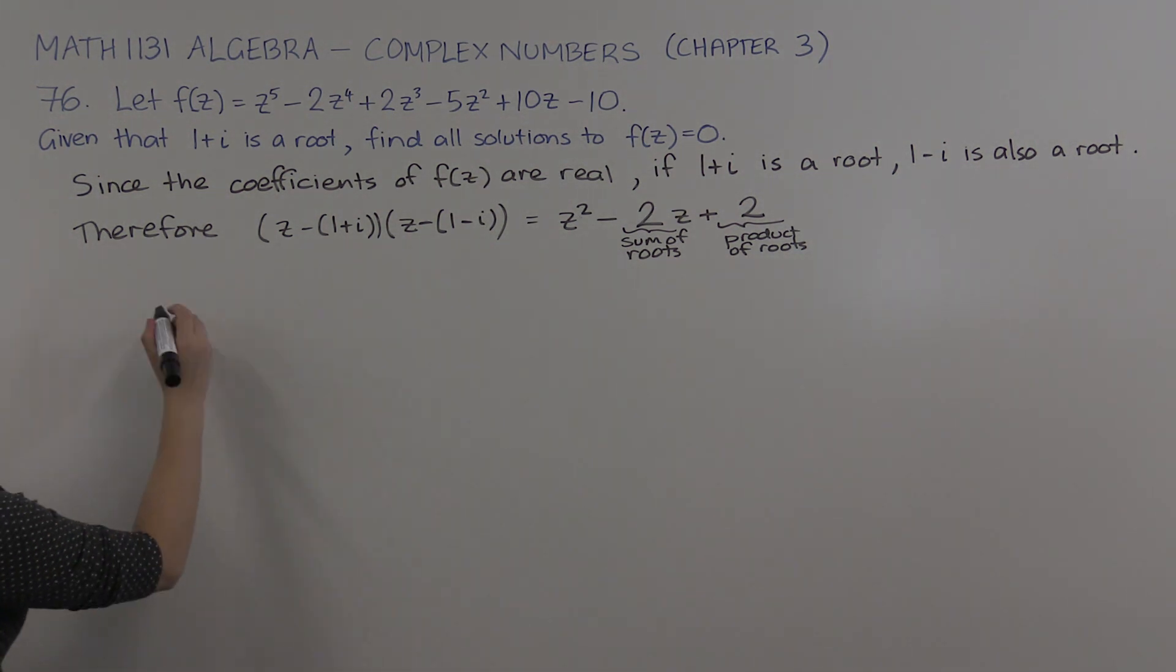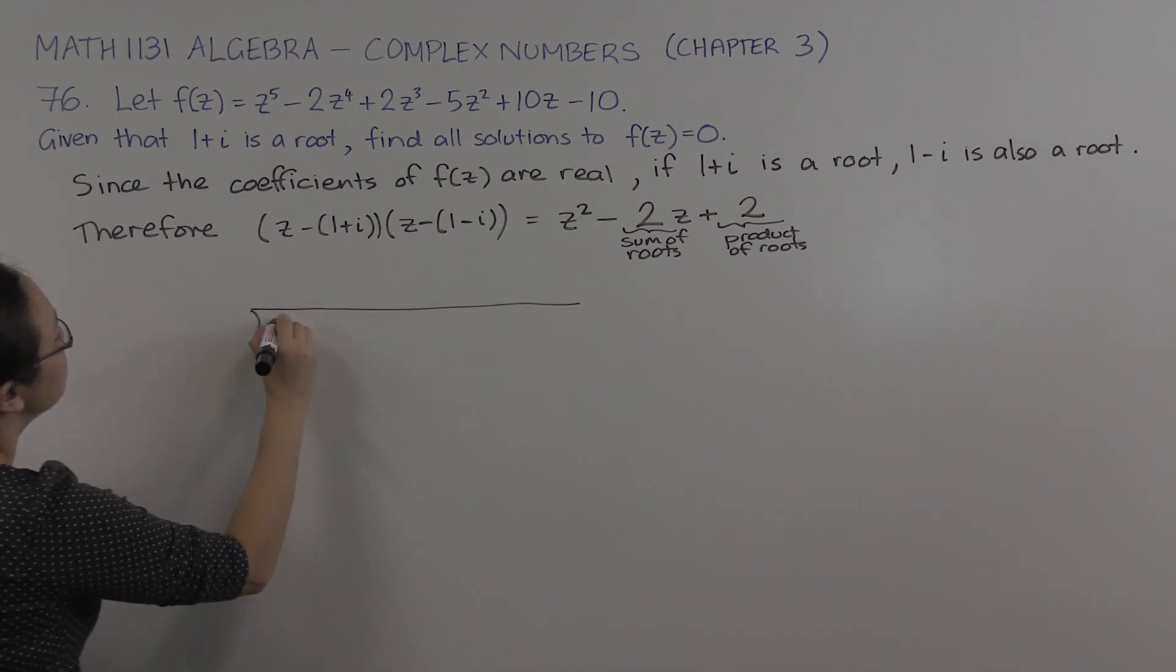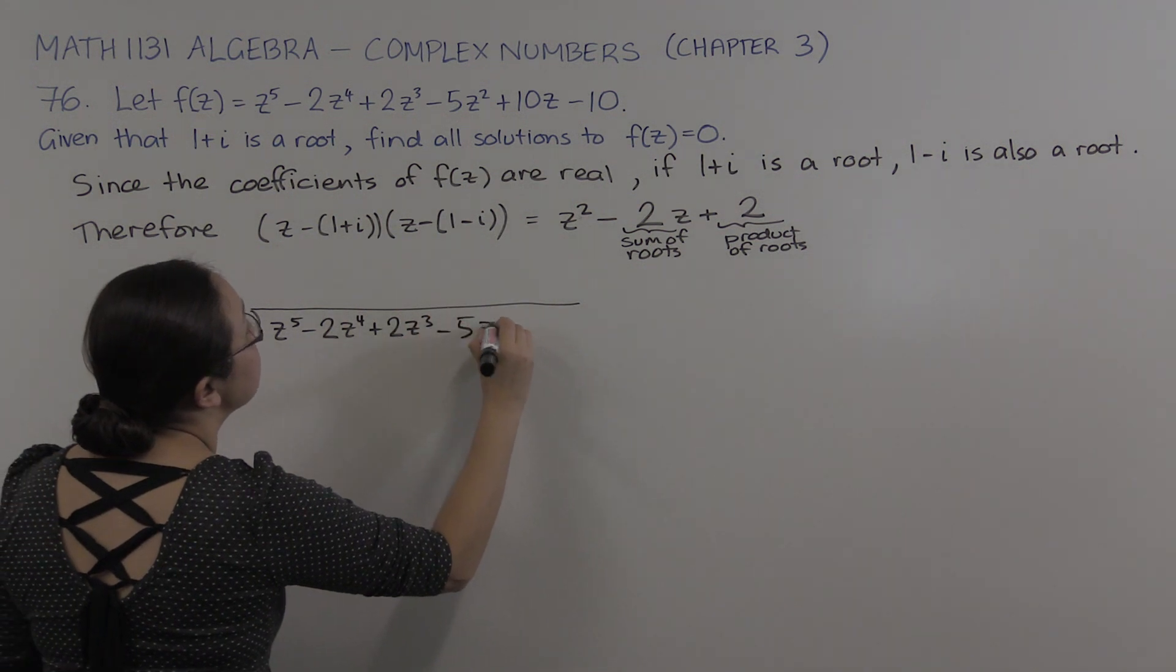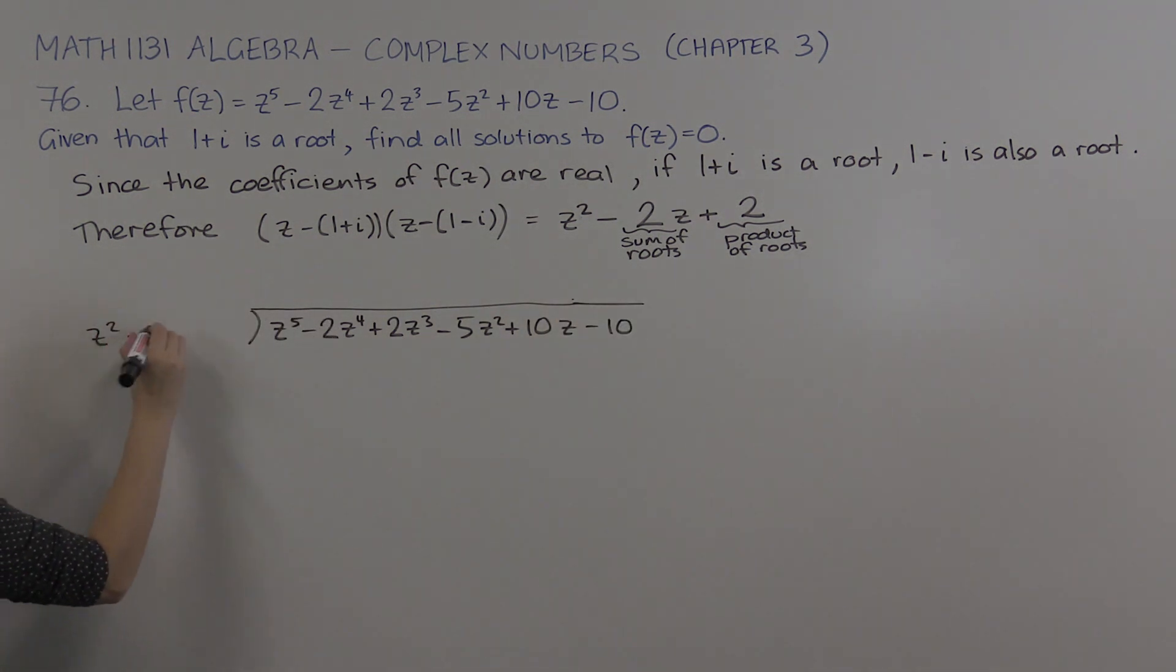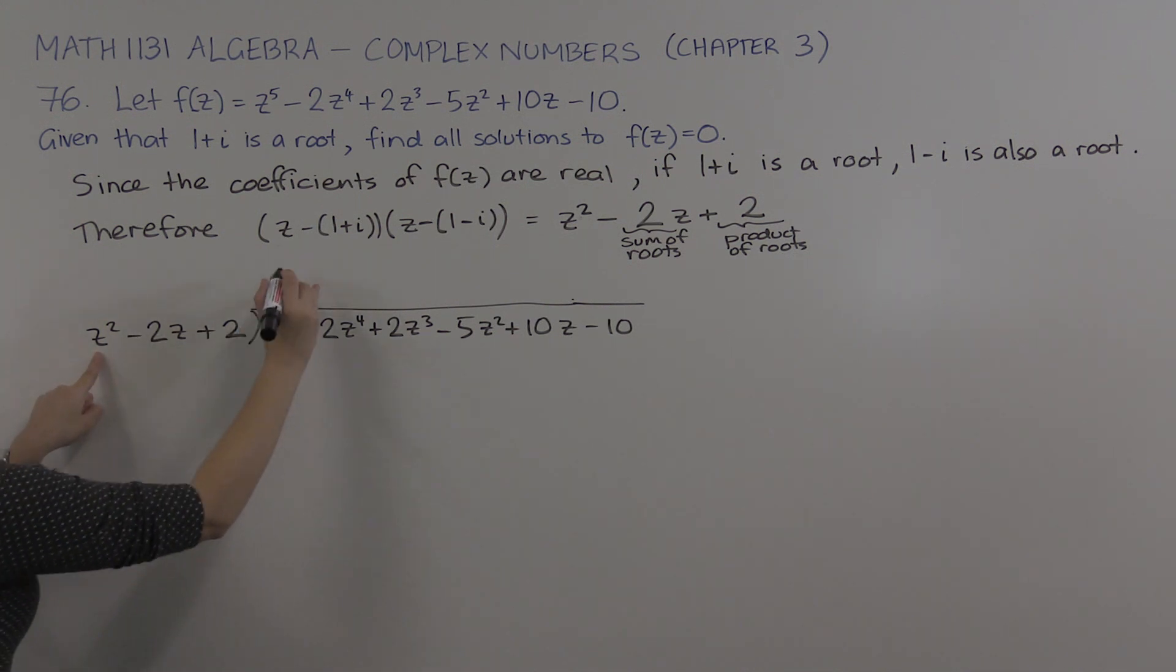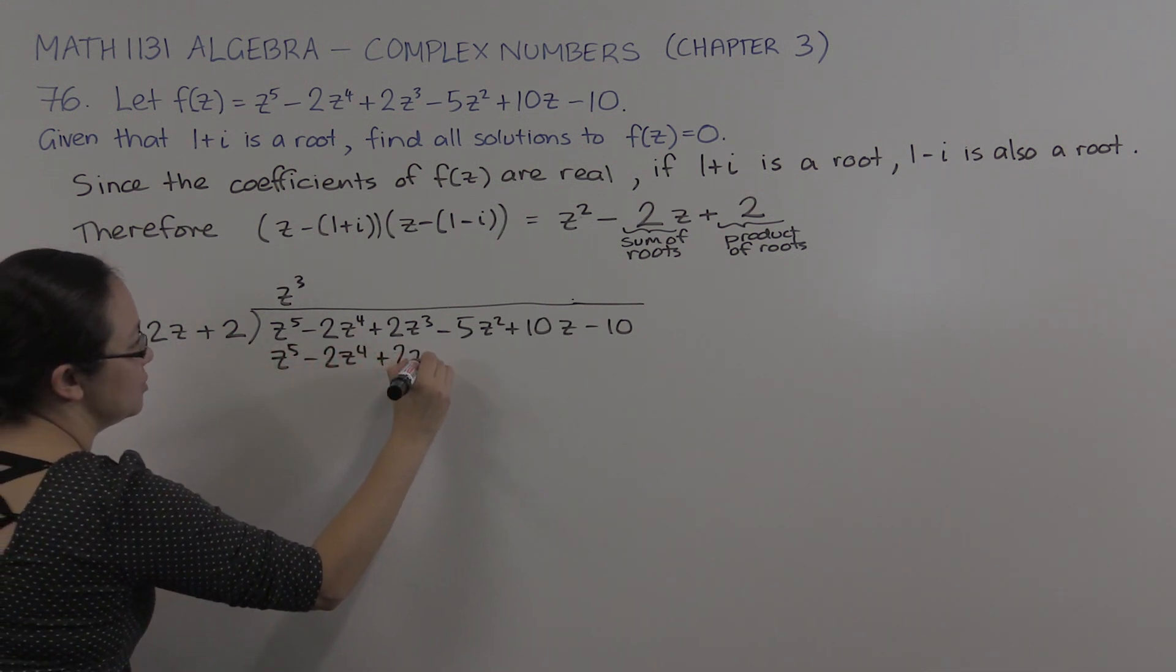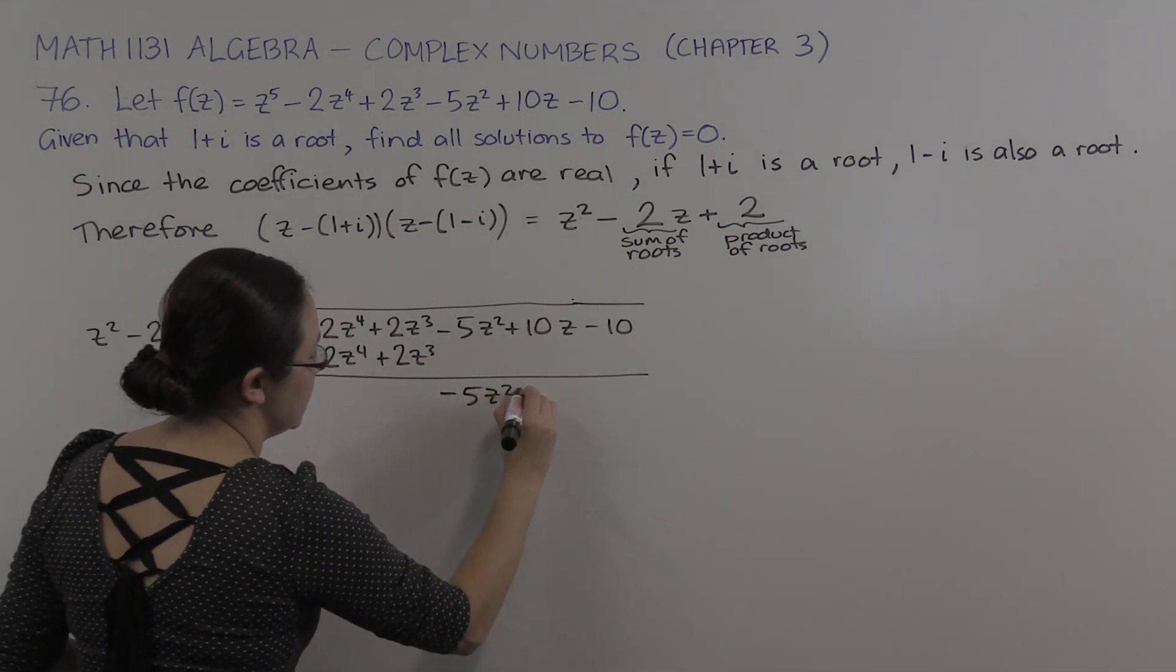Now if it's a factor, we can use long division to work out the rest of the factors. So we have our polynomial z to the 5 minus 2z to the 4 plus 2z cubed minus 5z squared plus 10z minus 10. And we're dividing out z squared minus 2z plus 2. Now this turns out to be a very easy factorization because there are z cubed z squareds in z to the 5. Multiplying this out, we actually get z to the 5 minus 2z to the 4 plus 2z cubed. They're exactly the same. So when you subtract, all subtracts to 0 and we just have to bring this down here.